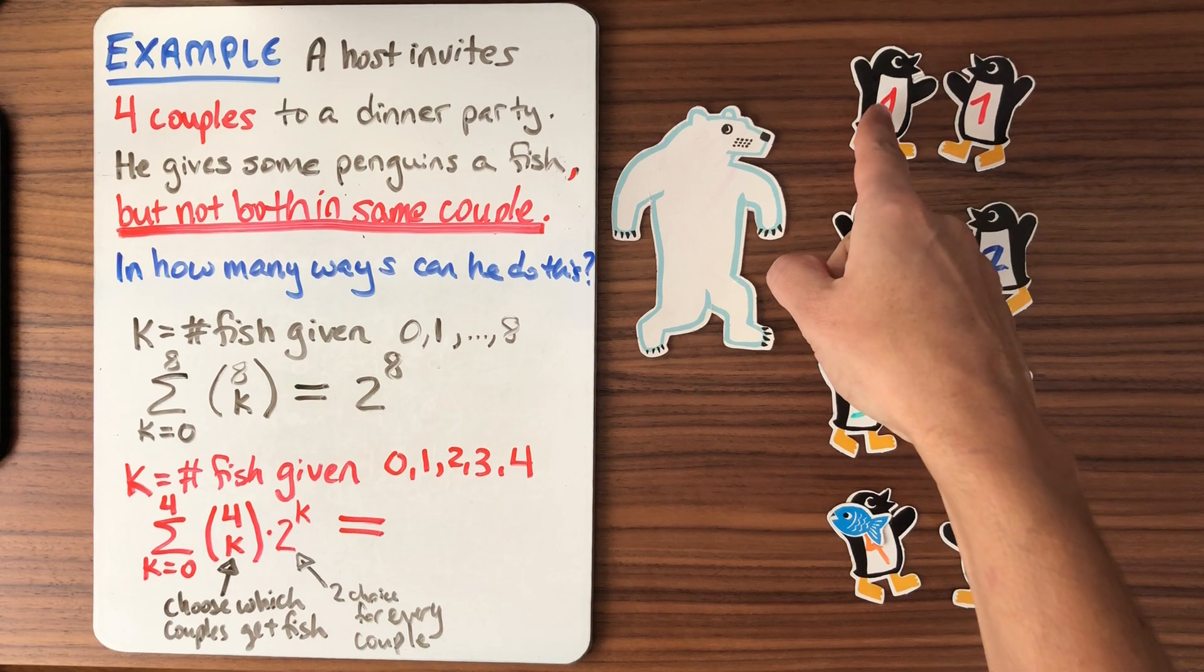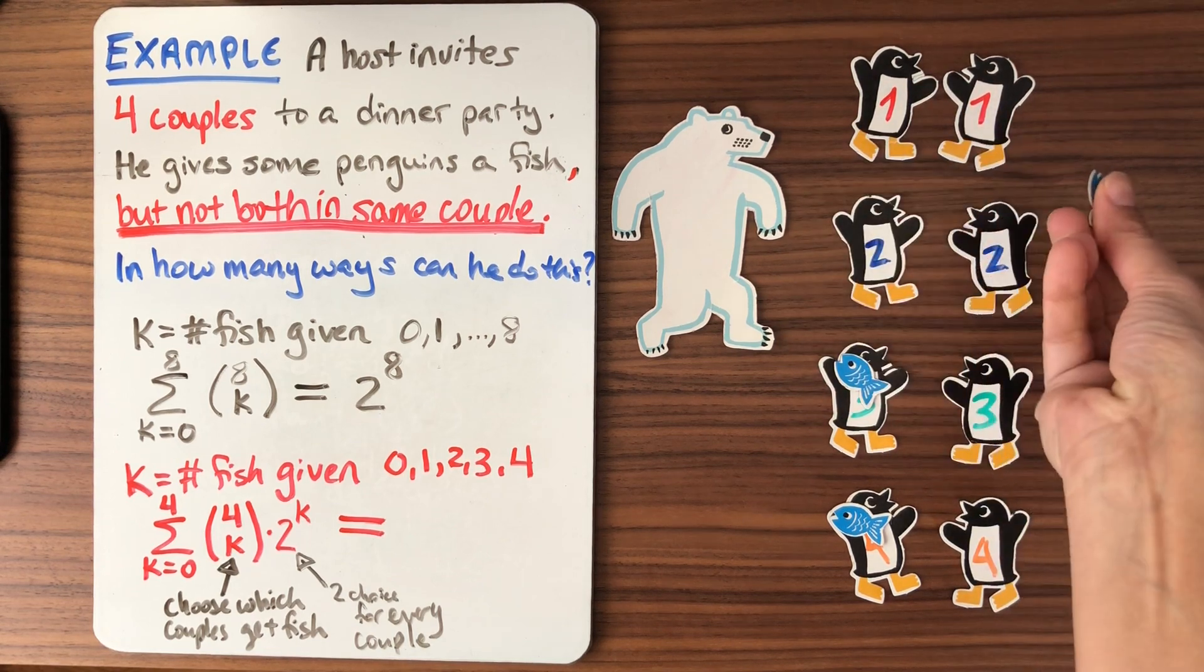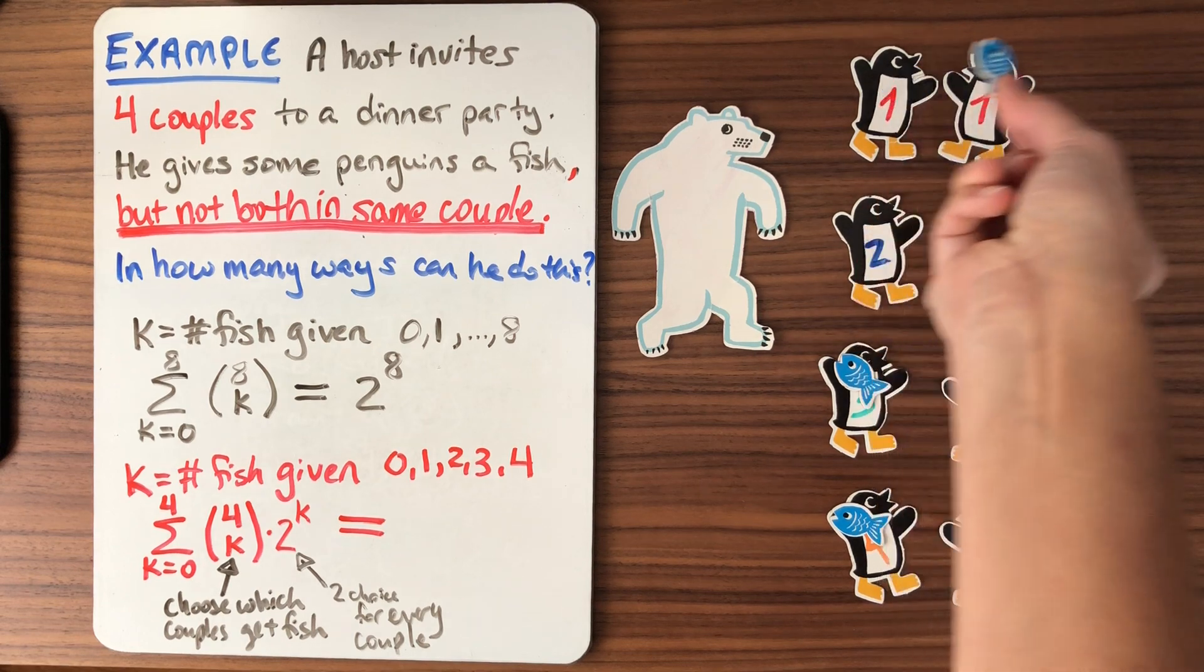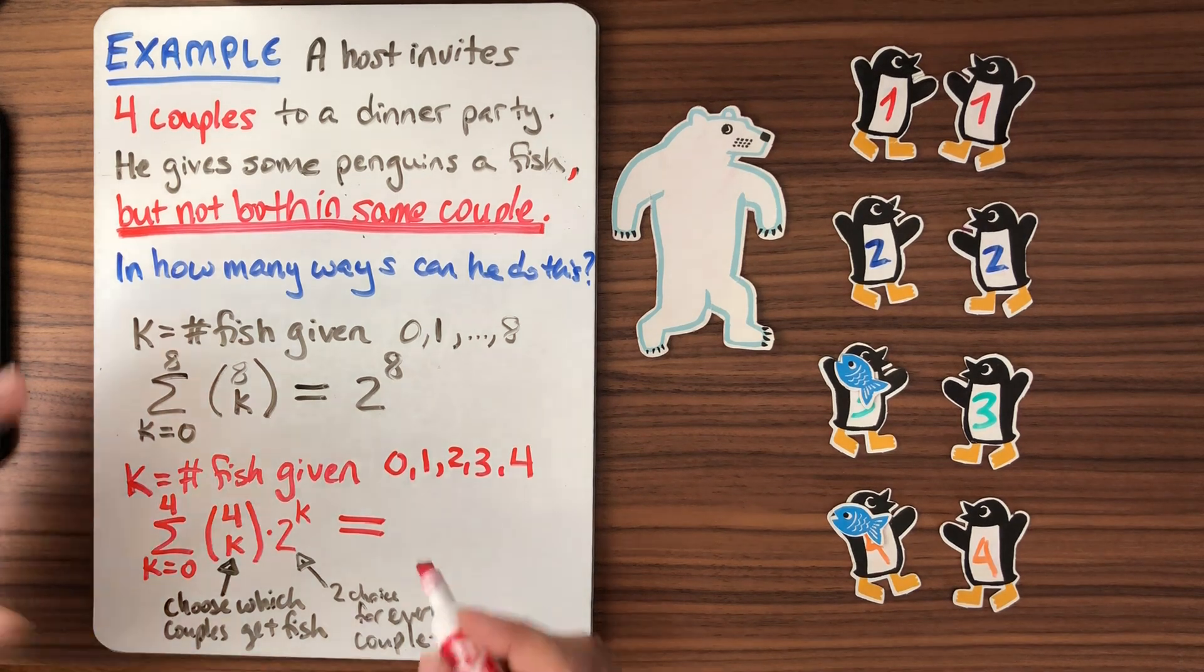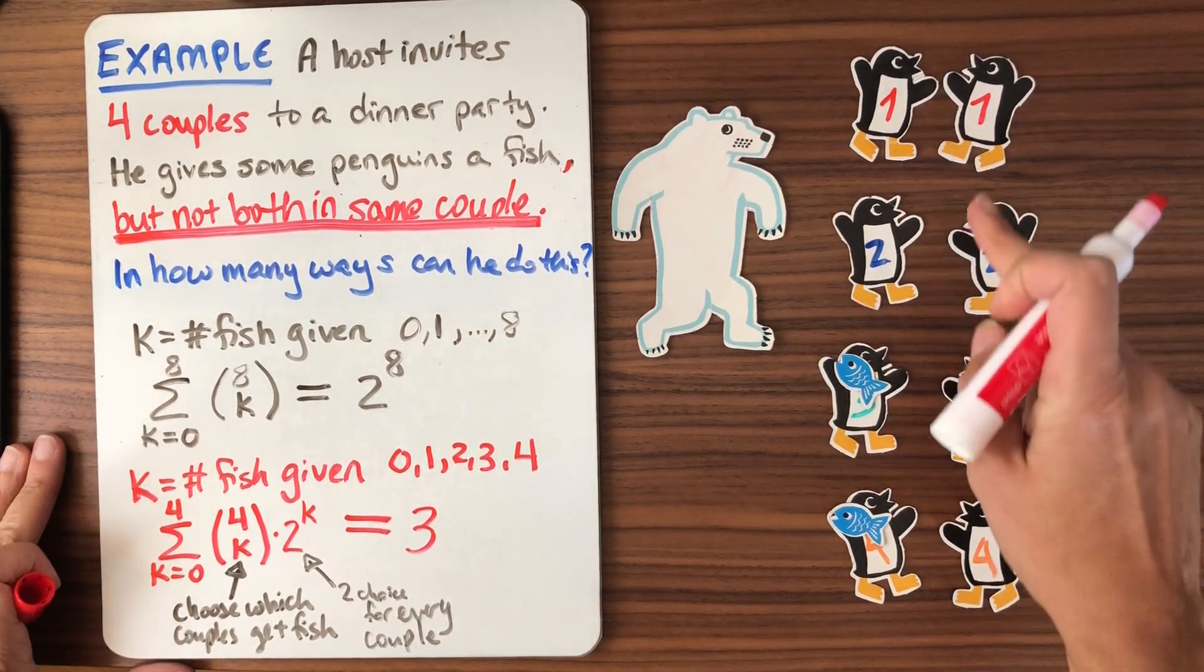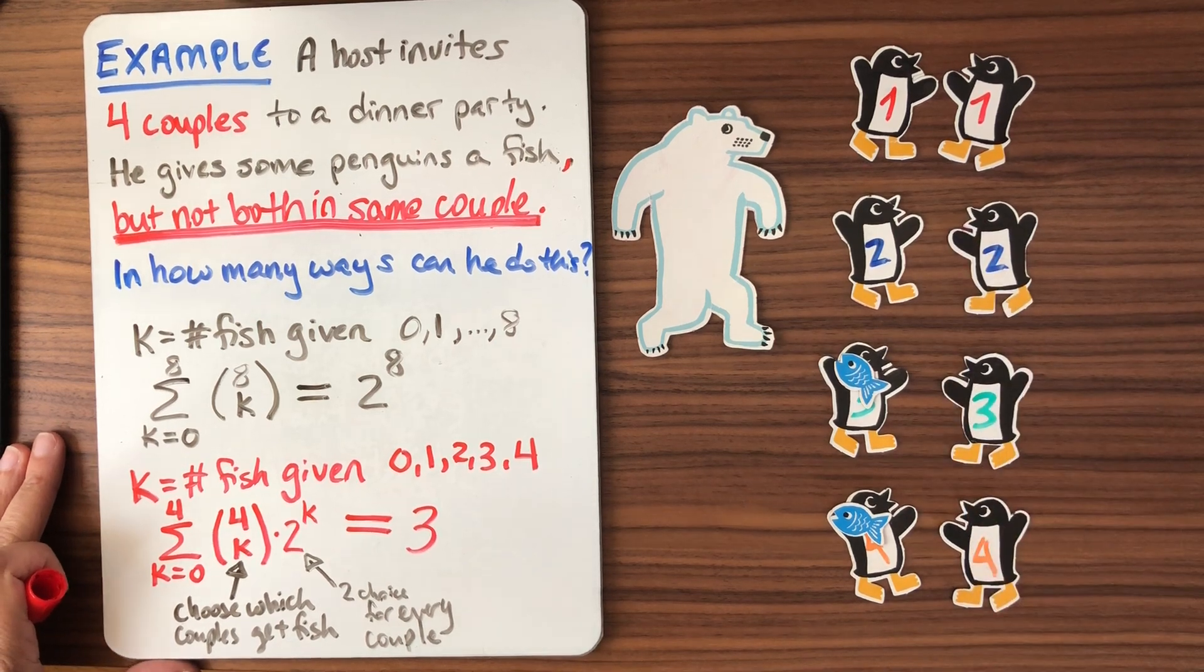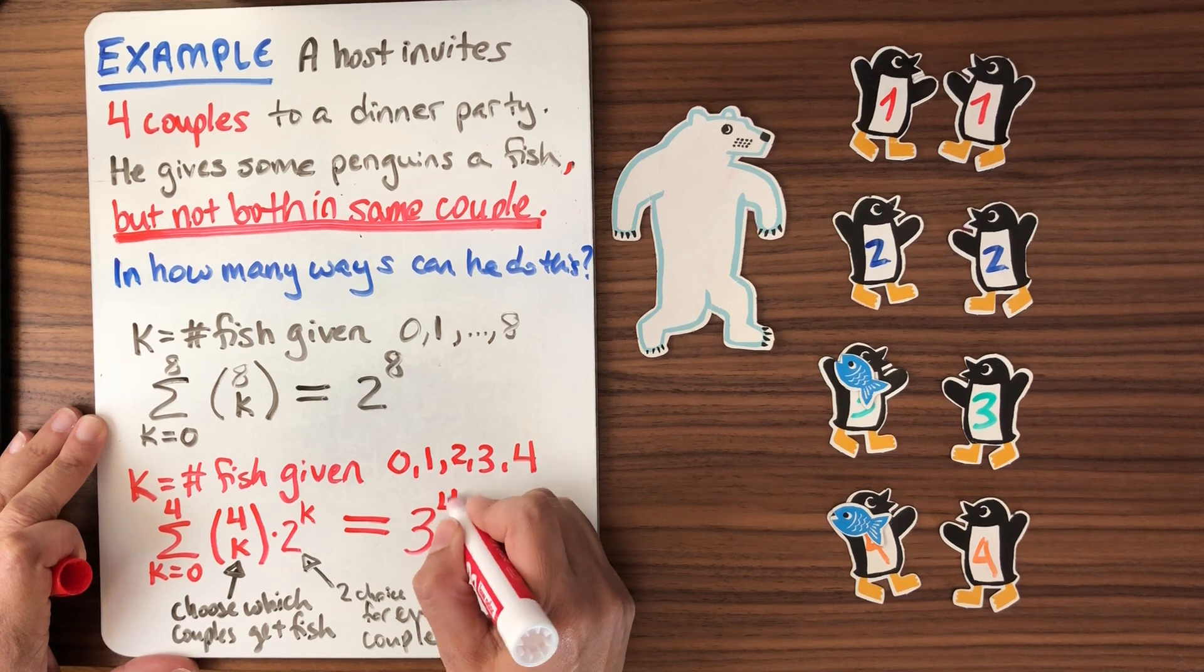Well, we can either give a fish to this guy or to this guy or to neither. Those are our three options. We now have three options. Fish, fish, no fish, okay? So that gives us three options. And how many times do we make this choice? Well, there are four couples to choose from, so it's three to the four.